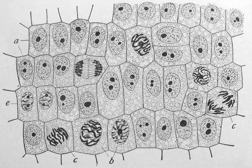Many eukaryotic cells are ciliated with primary cilia. Primary cilia play important roles in chemosensation, mechanosensation, and thermosensation. Cilia may thus be viewed as sensory cellular antennae that coordinate a large number of cellular signaling pathways, sometimes coupling the signaling to ciliary motility or alternatively to cell division and differentiation. Motile eukaryotes can move using motile cilia or flagella. Motile cells are absent in conifers and flowering plants. Eukaryotic flagella are less complex than those of prokaryotes.